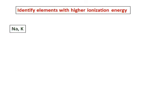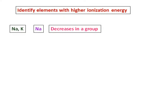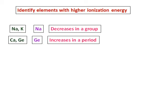Now identify elements with higher ionization energy — refer back to the trend summary. Between sodium and potassium, sodium will have higher ionization energy because ionization energy decreases in a group. Between calcium and germanium, germanium will have higher ionization energy because ionization energy increases in a period.